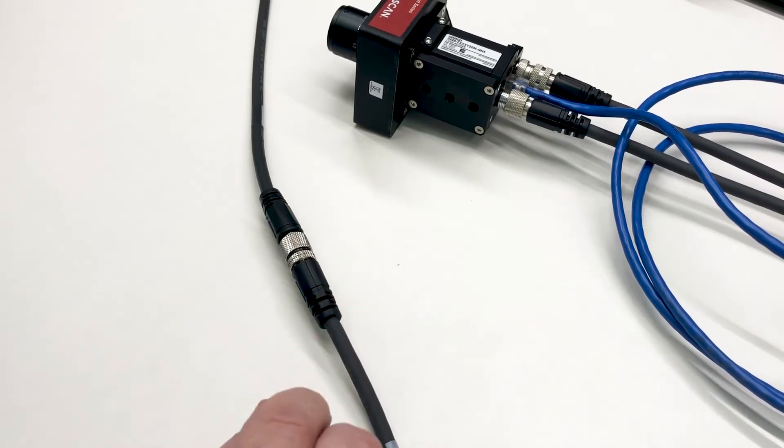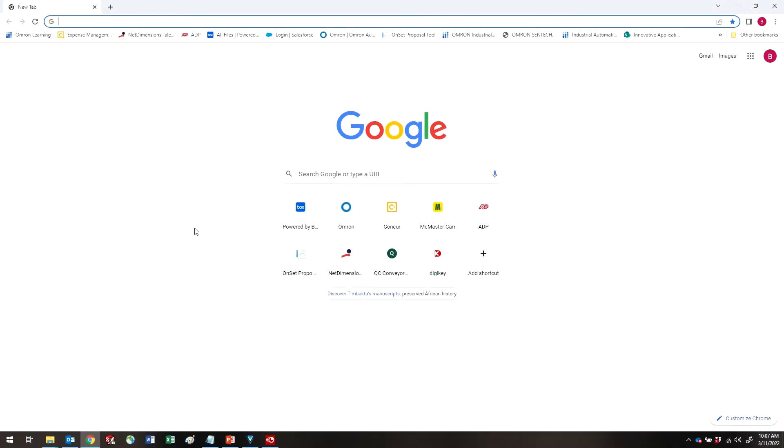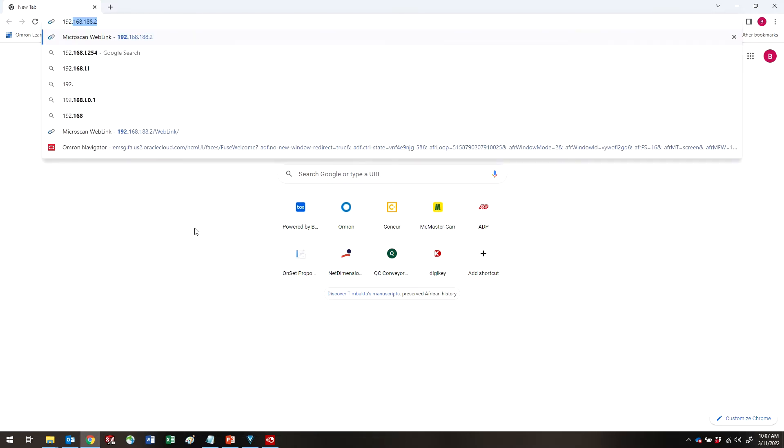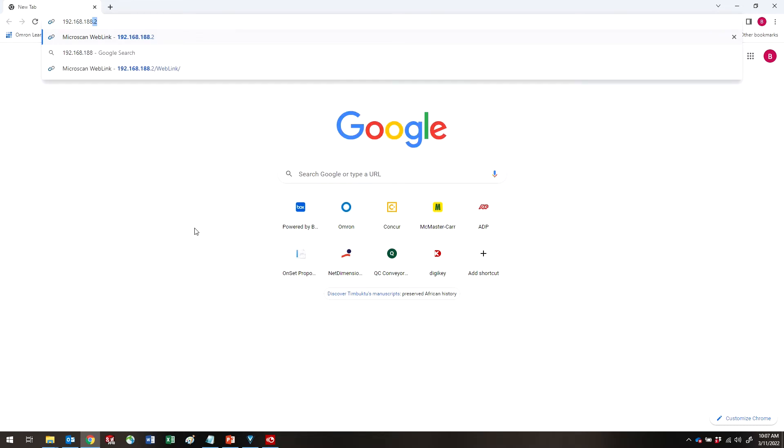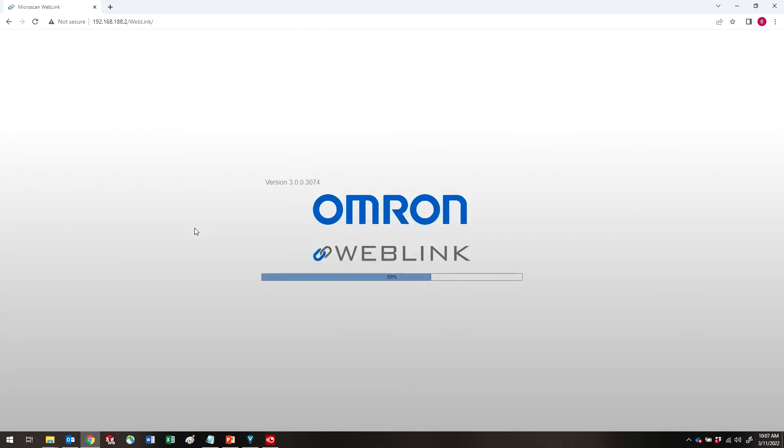You can now mount your V440 to your equipment. Once you have the V440 powered and connected to your computer, you can start your web browser. In your web browser, enter the V440's address. The default address is 192.168.188.2. OMRON WEBLINK will automatically start.